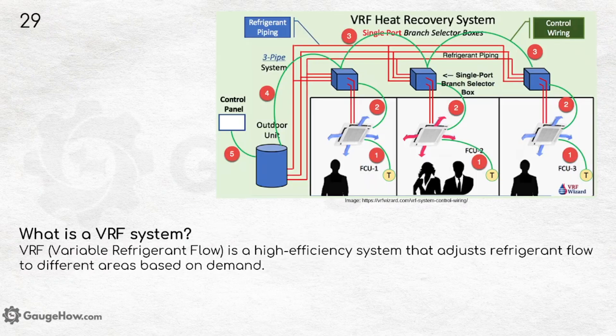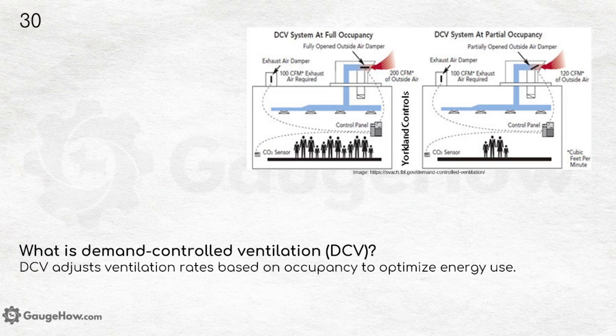What is a VRF system? Variable Refrigerant Flow is a high-efficiency system that adjusts refrigerant flow to different areas based on demand. What is Demand Controlled Ventilation? DCV adjusts ventilation rates based on occupancy to optimize energy use — this technique is mostly used in offices.